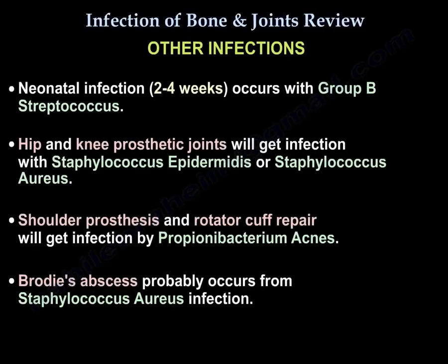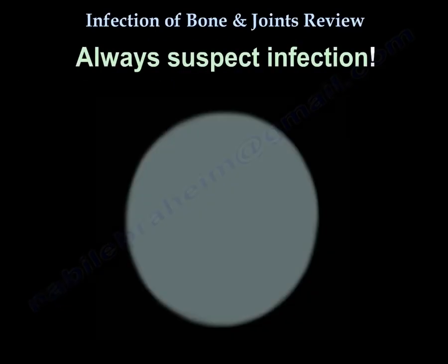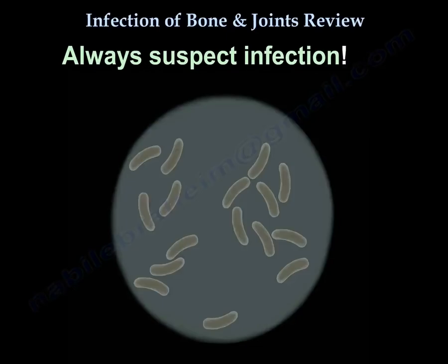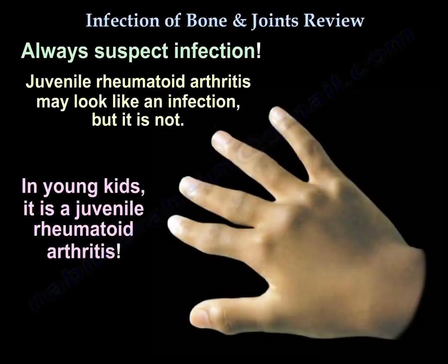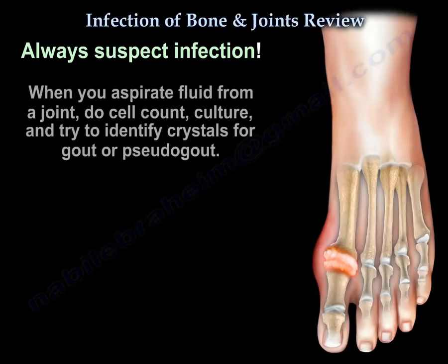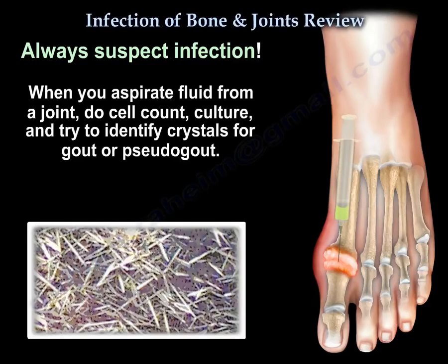Other infections: newborns get infection at two to four weeks with group B strep. The hips, knees, and prosthetic joints get infection with Staph epidermidis or Staph aureus. Shoulders, prostheses, and rotator cuff repairs get infection by P. acnes. Brodie's abscess is probably Staph aureus. Juvenile rheumatoid arthritis may look like an infection in young kids but it is not. When you aspirate fluid from a joint, do a cell count, culture, and try to identify crystals for gout or pseudo-gout.